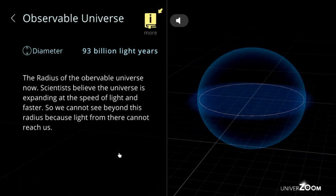Observable universe, diameter: 93 billion light years. The radius of the observable universe now. Scientists believe the universe is expanding at the speed of light and faster. So we cannot see beyond this radius because light from there cannot reach us.